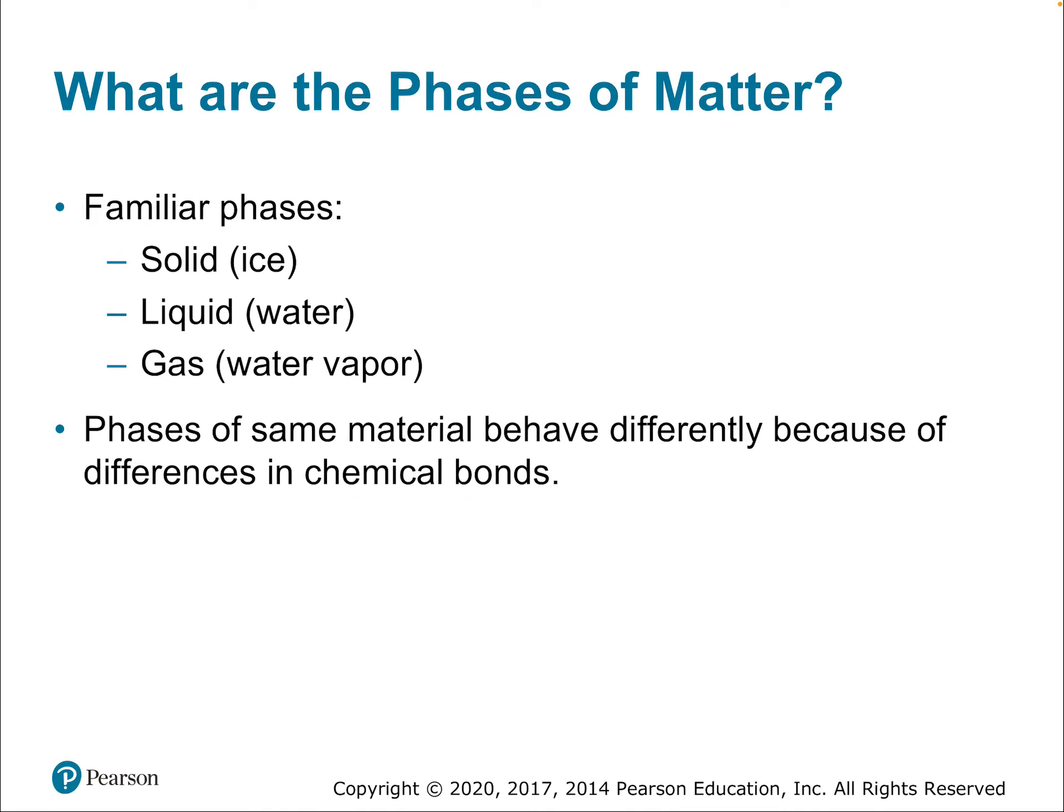So now let's zoom out a little bit and talk about pieces of matter on the macroscopic level and how they can phase change and how that's really important for understanding energy flows through a system. The three phases of matter are solid, liquid, and gas. Now the phases of some of the same material behave differently because of differences in chemical bonds.